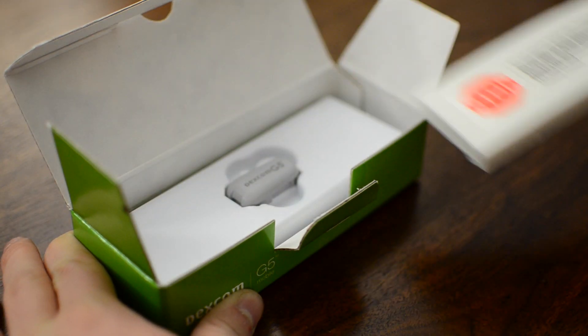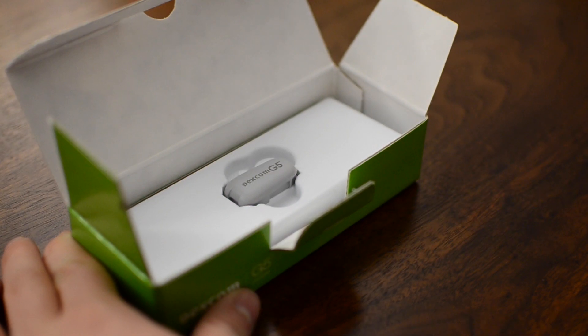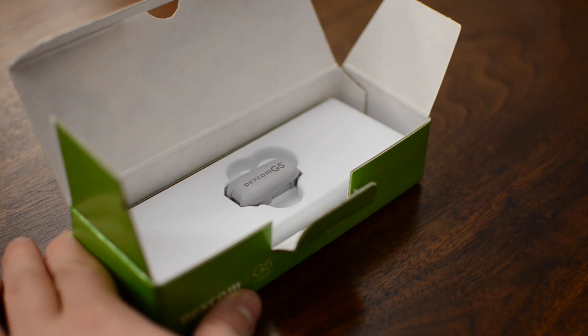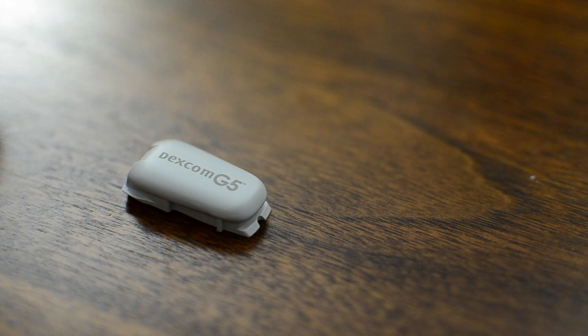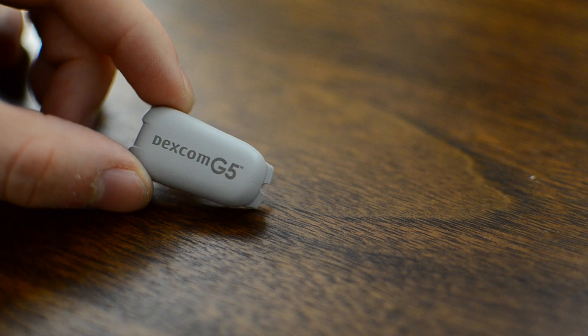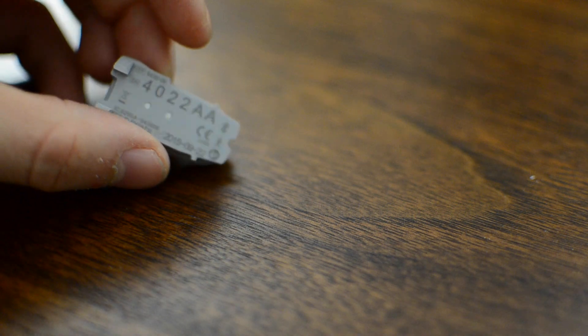The big difference between this and the last generation G4 is that you can essentially use the G5 completely independent of a receiver. That was a big hang-up for a lot of people having to carry that receiver around. Now with this new G5 sensor, everything is built in. It just uses Bluetooth and goes straight to your phone.